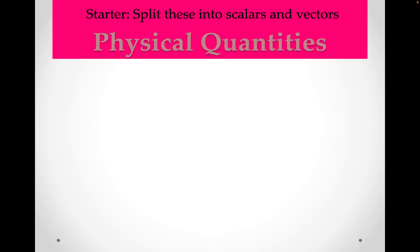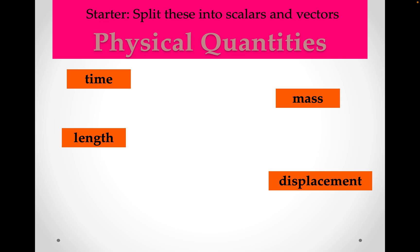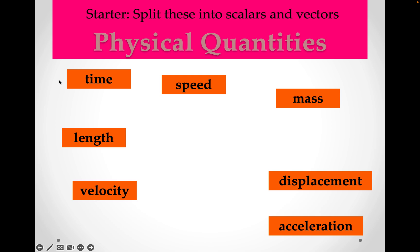First things first, you need to know which things are scalars and which things are vectors, because only vectors is what we're going to use the addition for. So these are a whole bunch of things that we need to know: time, speed, mass, length, displacement, acceleration, velocity, force, distance.